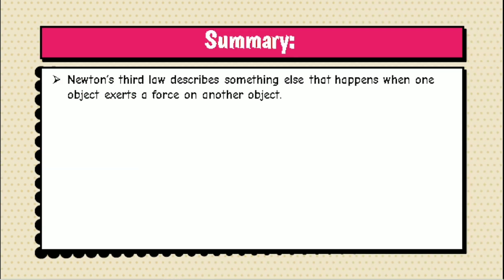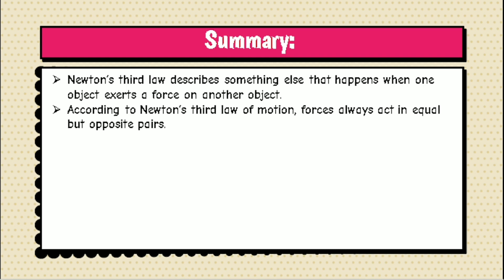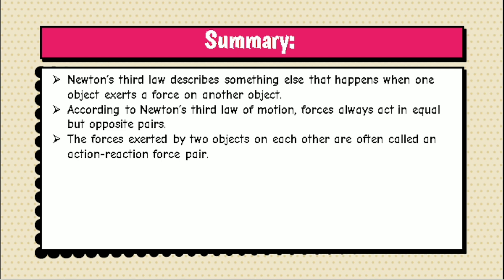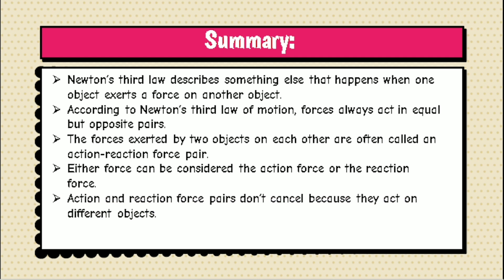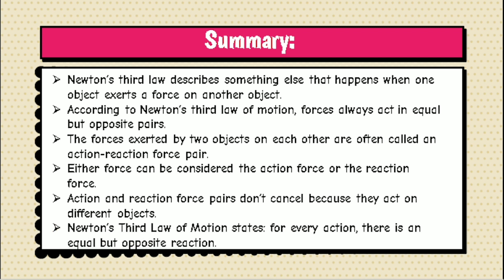Here is the summary of the lesson. Newton's third law describes what happens when one object exerts a force on another object. According to Newton's third law of motion, forces always act in equal but opposite pairs. The forces exerted by two objects on each other are often called an action-reaction force pair. Either force can be considered the action force or the reaction force. Action and reaction force pairs don't cancel because they act on different objects. Newton's third law of motion states: for every action, there is an equal but opposite reaction.